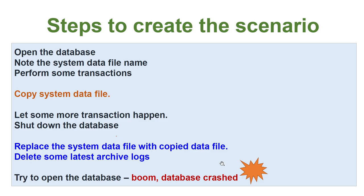To recreate this scenario in your home lab: open the database and note the name of your system datafile. Perform some transactions, then copy the system datafile while the database is open — do not shut down the database. Perform some more transactions, then shut down the database. Replace the system datafile with the previously copied version, effectively taking it back in time. Then delete some of the latest archive logs, and try to open the database — it will crash. Try a complete recovery; it will fail because you deleted the archive logs. We will create and resolve this scenario in this exercise.